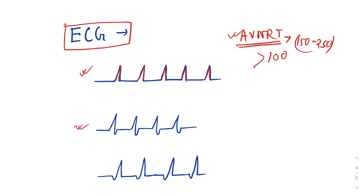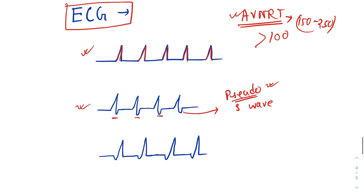In this pattern, we can see something which looks like an S wave — this is known as a pseudo-S wave. This is actually the retrograde P wave coming just after the QRS complex, giving the appearance of an S wave. In the next pattern, we can see something looking like a Q wave — but this is a pseudo-Q wave, because it is actually the retrograde or inverted P wave coming just before the QRS complex. Most of the time we will see a pseudo-S wave, but in some rare cases we can find a pseudo-Q wave also.